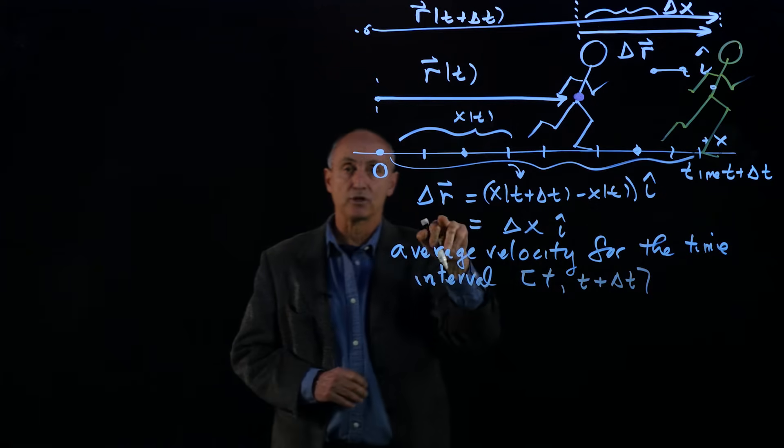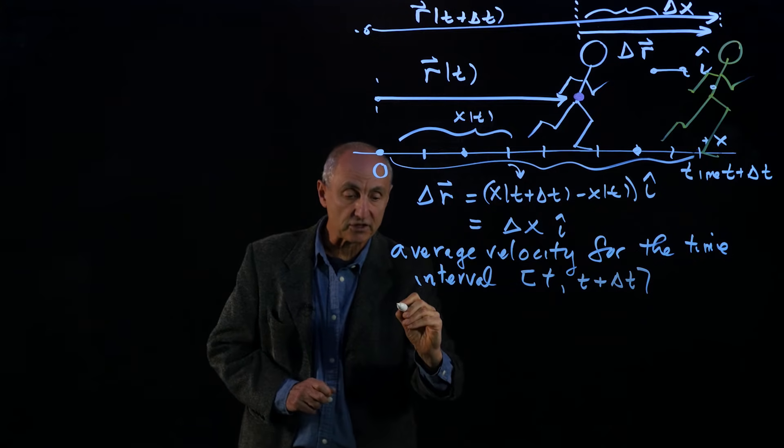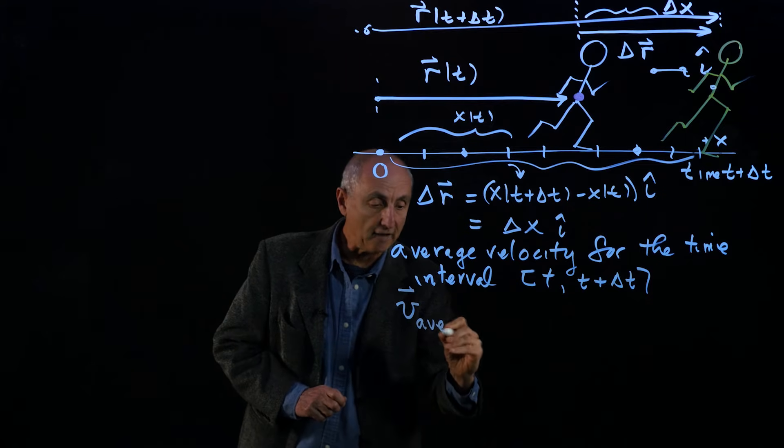Well, the person has displaced a certain amount of vector delta r. And our definition for v average, it's a vector quantity. So we'll write v average.